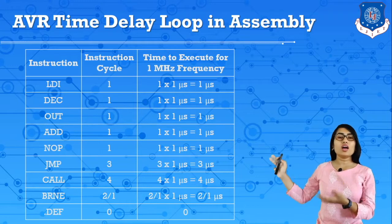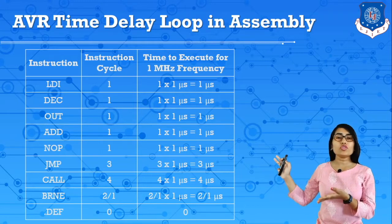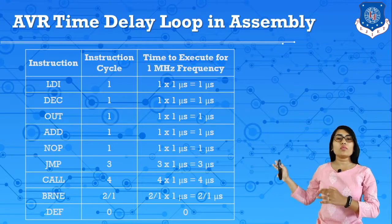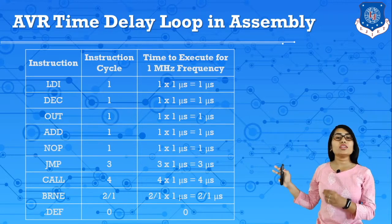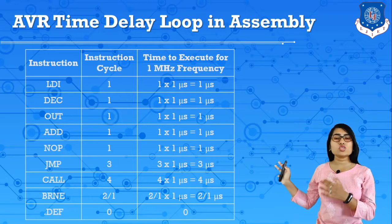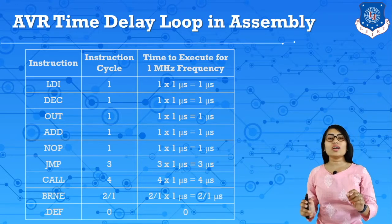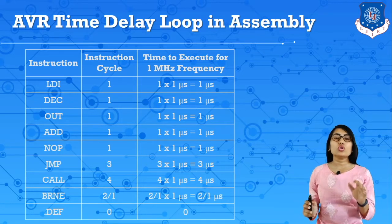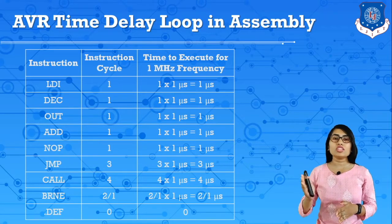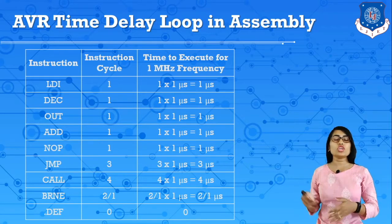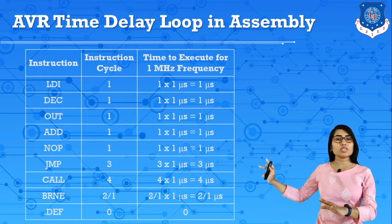To calculate the duration required to execute instructions, we first convert frequency to time. At 1 MHz, the clock period is 1 microsecond. Higher frequency means lower time duration — so higher frequency means faster operations are performed. LDI requires one machine cycle, so for 1 MHz it requires 1 × 1 = 1 microsecond to execute.